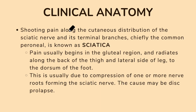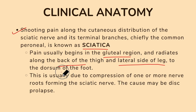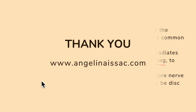To summarize the clinical anatomy: shooting pain across the cutaneous distribution of the sciatic nerve and its terminal branches, chiefly the common peroneal, is known as sciatica. Pain begins in the gluteal region, radiates along the back of the thigh and the lateral side of the leg to the dorsum of the foot, usually due to compression of one or more nerve roots forming the sciatic nerve, with disc prolapse as a common cause.